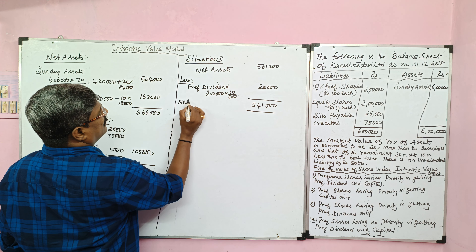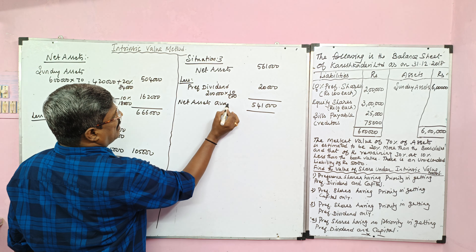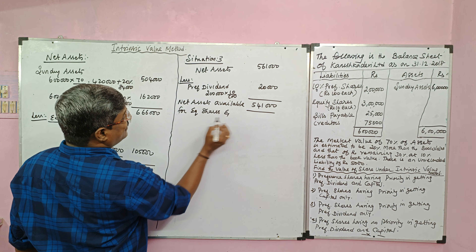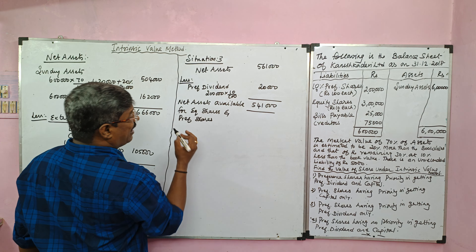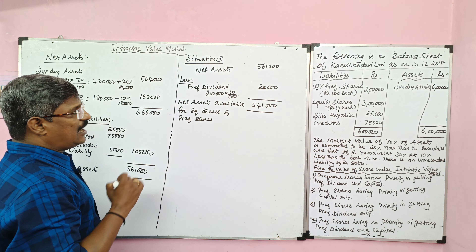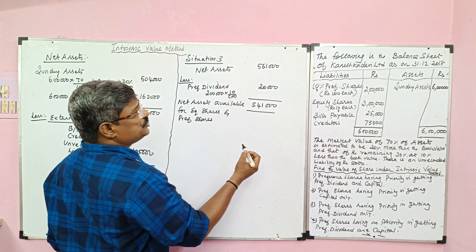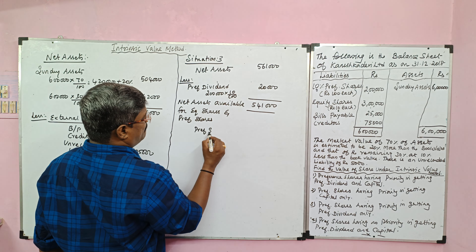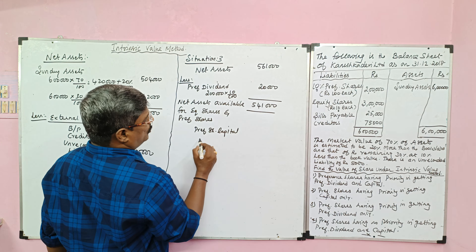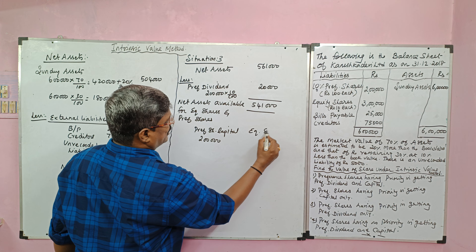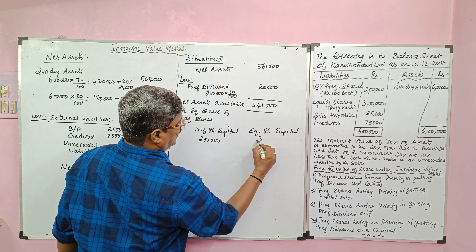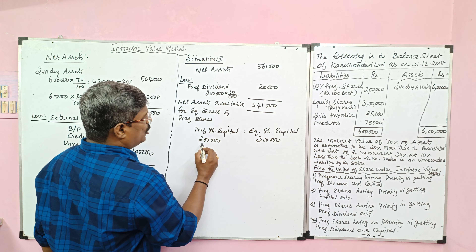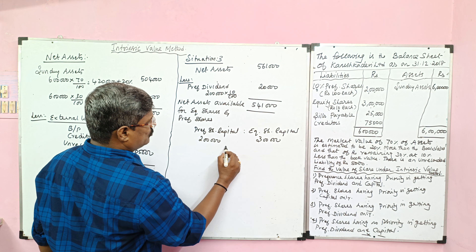These net assets of 5,41,000 are available for both equity shares and preference shares. We should divide the remaining net assets in the ratio of preference share capital to equity share capital. Preference share capital is 2 lakh, equity share capital is 3 lakh. So the ratio is 2 is to 3.